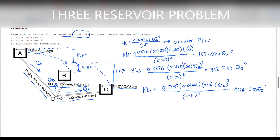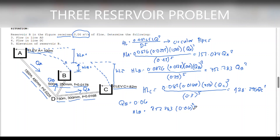From our given, QB is equal to 0.06 cubic meter per second. Substituting it into the head loss formula for B: 752,783 × (0.06)² equals 2.71 meters. So our head loss at B is equal to 2.71 meters.